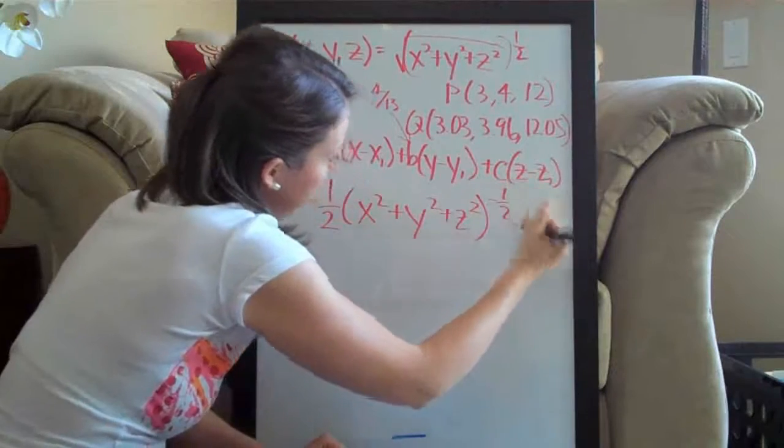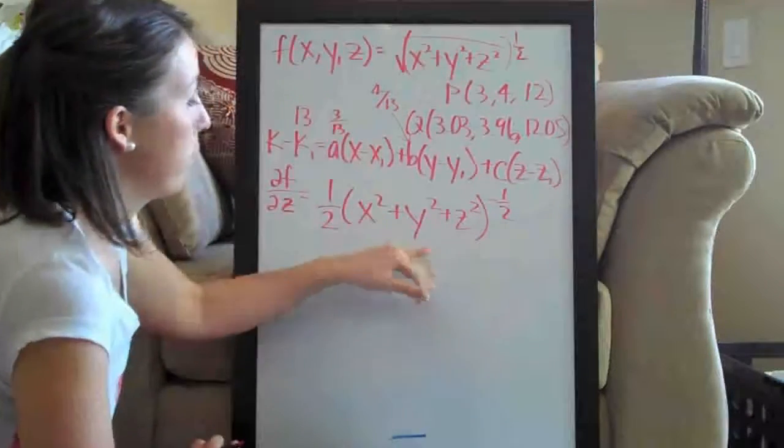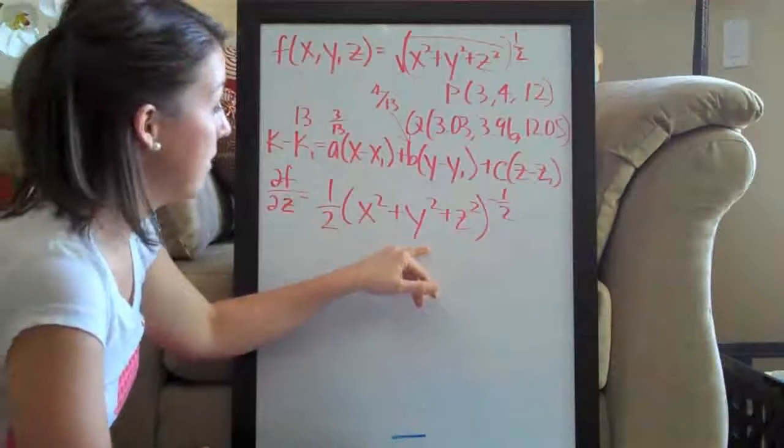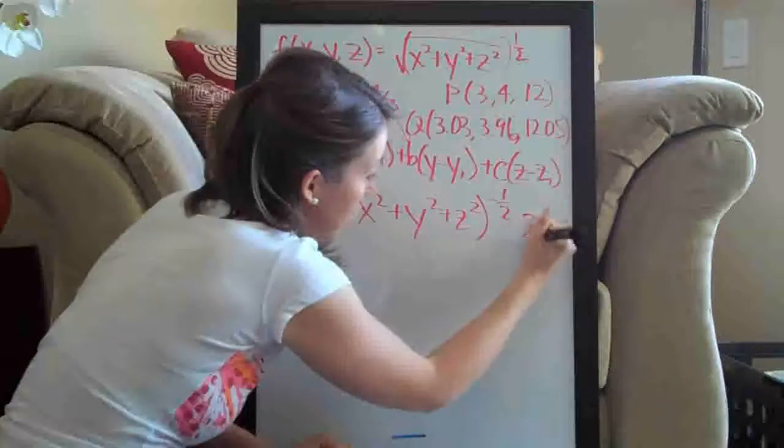Of course, the exponent becomes the negative one-half, and then we have to multiply by the derivative of the inside with respect to z, which is 2z.